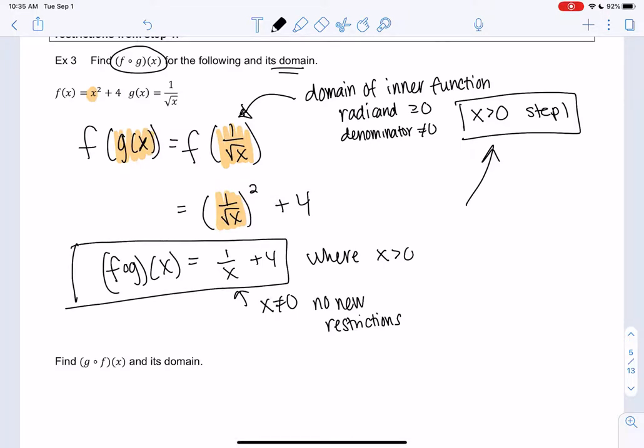So even though we technically could plug in negative 5, because of the original function, because of what we started with, negative 5 doesn't work. Because really what we're doing is we're starting with x's, we're inputting into 1 over square root x, so that's already eliminating some x values, and then we're plugging into x squared plus 4. So even though x squared plus 4 has lots of numbers allowed, we already lost some numbers with the first step. So hopefully that helps.